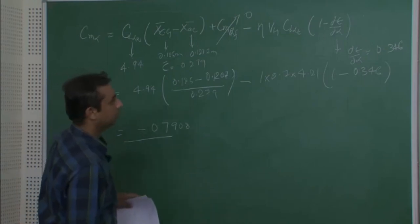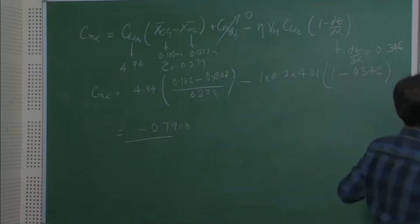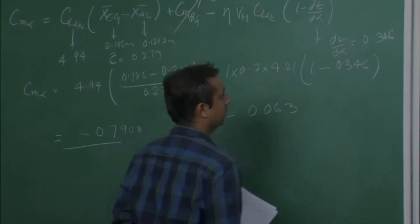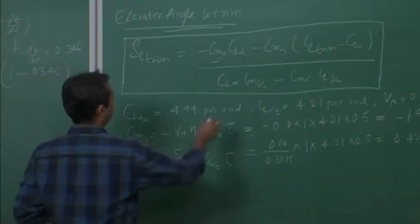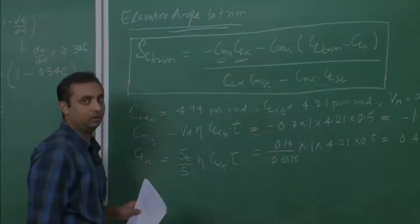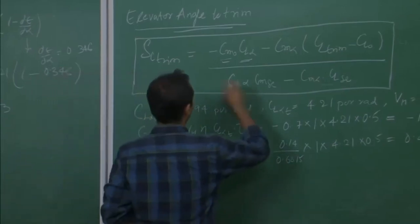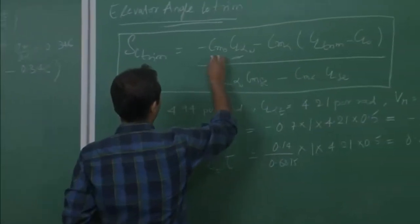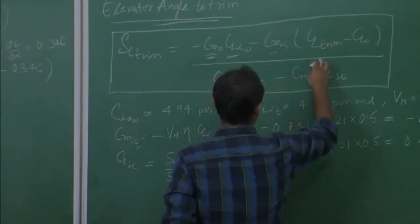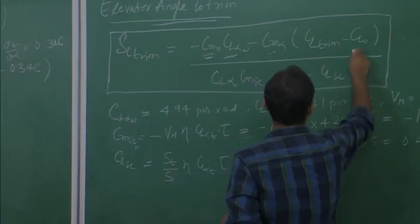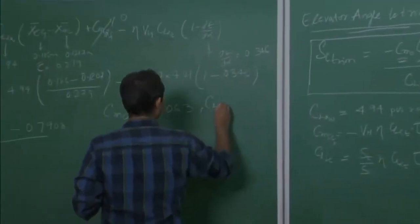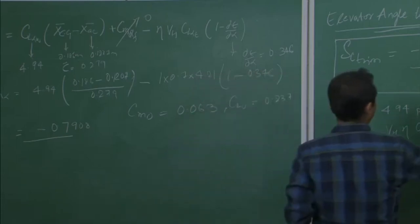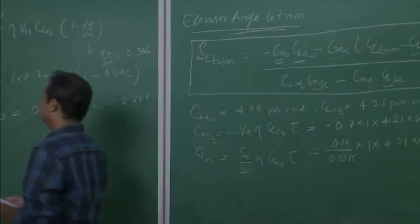We now have all the required parameters: CM0 = 0.063 (from yesterday), CL_α = 4.94 per radian, CM_α = −0.7908, CM_δE = −1.47, CL_δE = 0.428, CL0 = 0.237. For simplification, CL_α of the aircraft is approximated as CL_α of the wing.